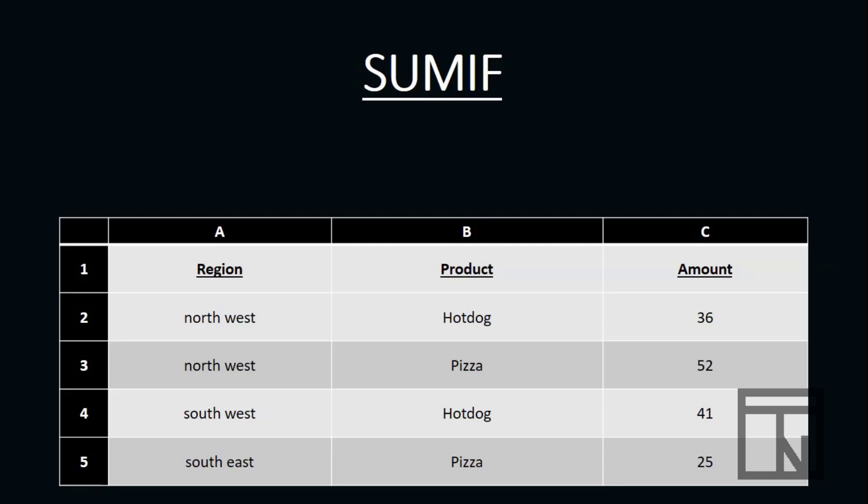Let's look at what a SUMIF would look like if we were to create it as an Excel function. Just like the basic Excel functions we've learned about previously, our function would begin with the equal sign, followed by the name of the function — SUMIF — and then our information would be in the parentheses. But unlike our basic functions, advanced functions like SUMIF have multiple pieces of information inside the parentheses.